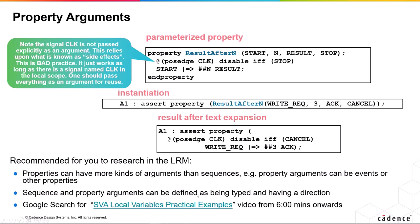Sequence and property arguments can be defined as being typed and having a direction as well. There are lots of limitations on that as well. So what I'd recommend is if you Google search for SVA local variables practical examples in the document you've got, just click on the link, it should work. If not, just Google search that term.